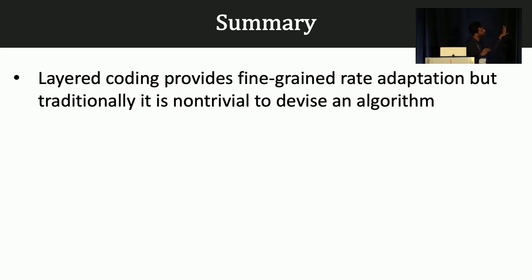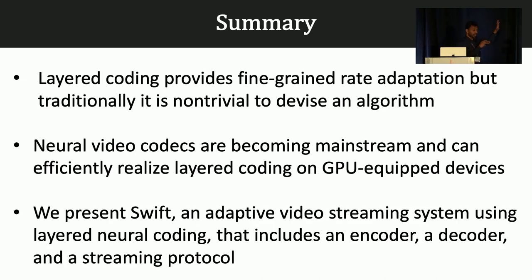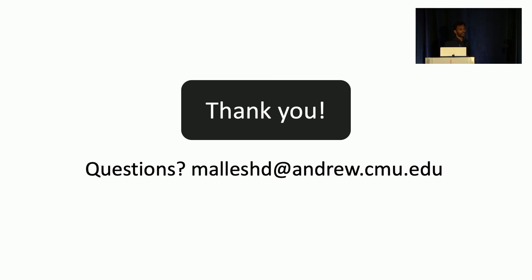To conclude, we have demonstrated that layered coding provides very fine-grained rate adaptation for variable networking conditions, though it has traditionally been difficult to realize. Neural video codecs are becoming more mainstream, and we have shown a way to realize layered coding using them. Overall, we presented Swift, an adaptive video streaming system using layered neural codecs with three components — an encoder, a decoder, and a streaming protocol. Thank you, and I would be happy to take questions.